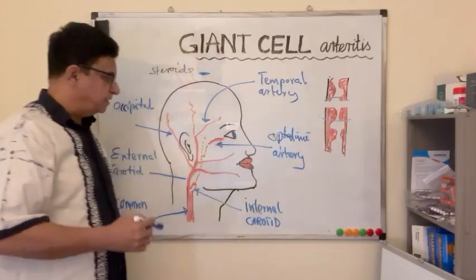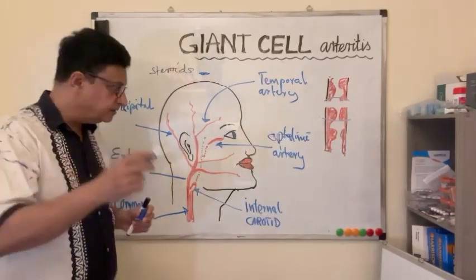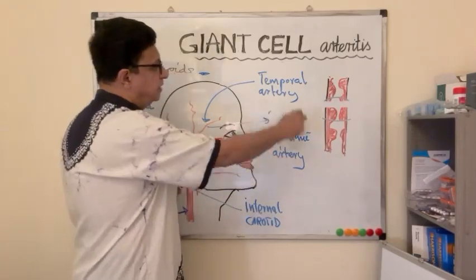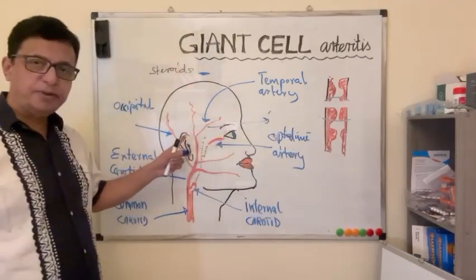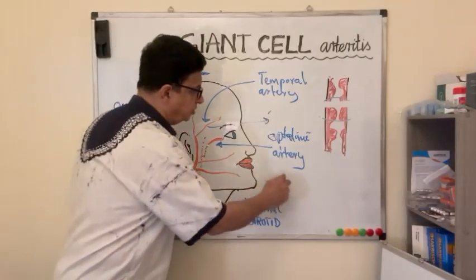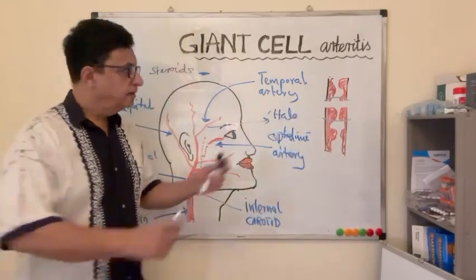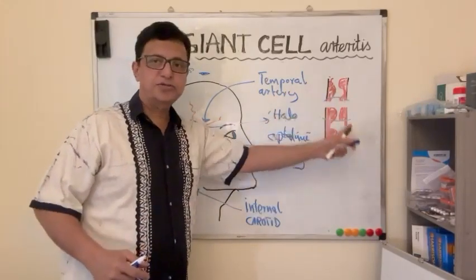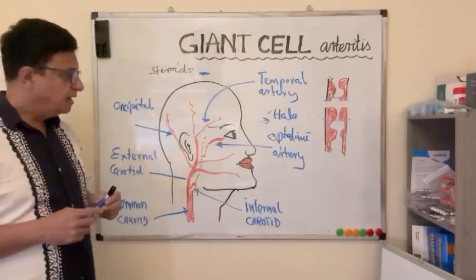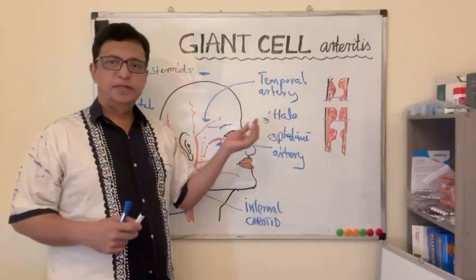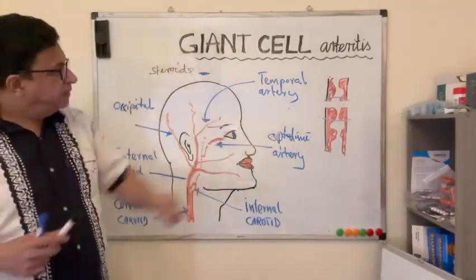Apart from temporal biopsy, there are other alternative diagnostic methods which are not much popular, that is Doppler ultrasound of the temporal artery which can show you halo sign. You can see some halos around the temporal arteries.